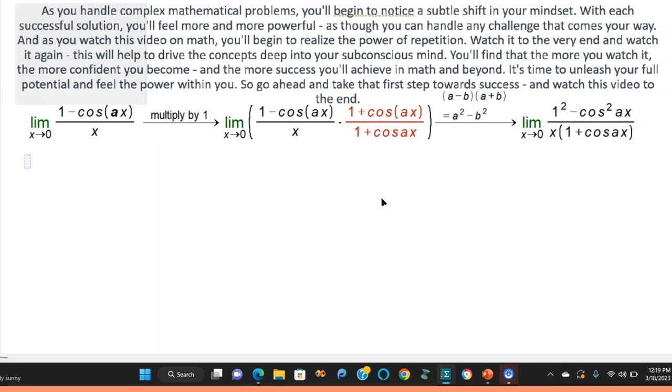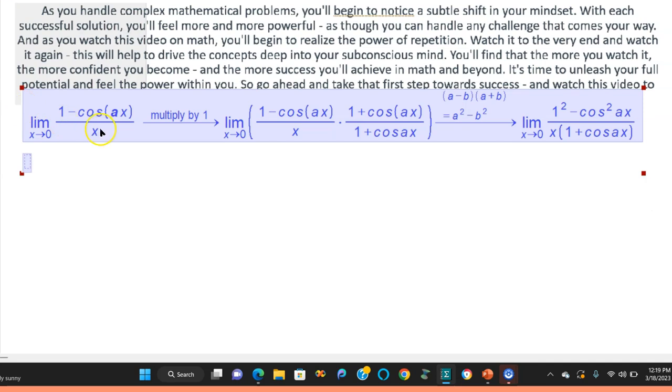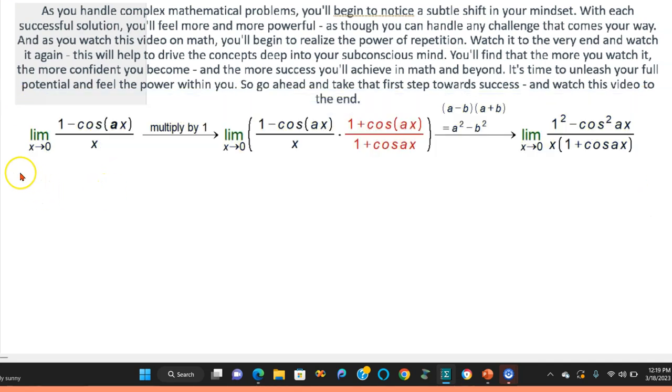If you have to pause and read the comment above, if you need that because it helps you psychologically to process math better—there's a big block that a lot of people have when it comes to math—then you're going to have the limit as x goes to 0 of 1 minus cosine squared ax over x times 1 plus cosine ax.